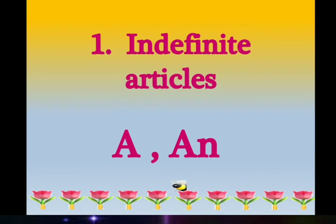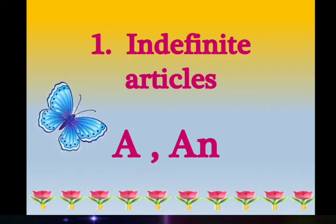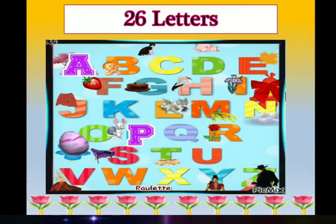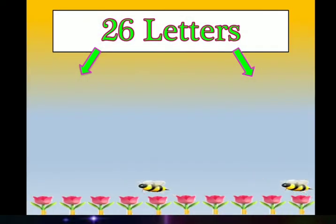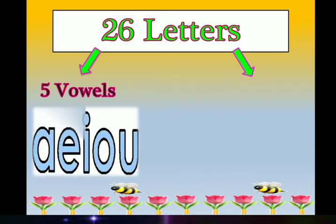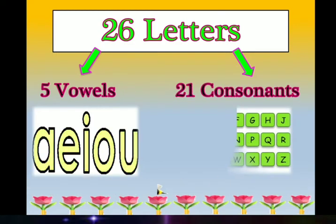Before learning about these articles, we should know that there are 26 letters in our English language. Among these 26 letters, 5 letters are the vowels, which are A, E, I, O, U. And the remaining 21 letters are called consonants.